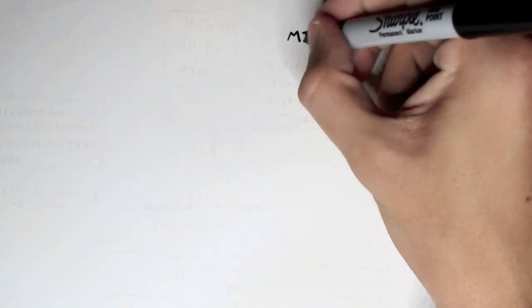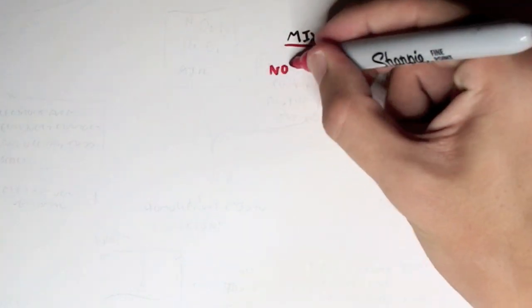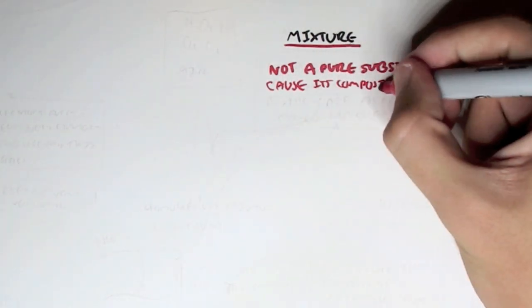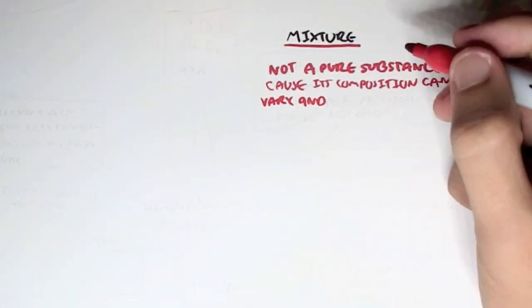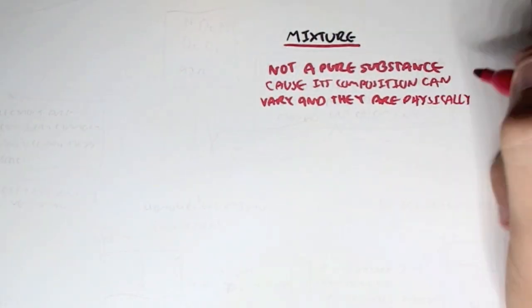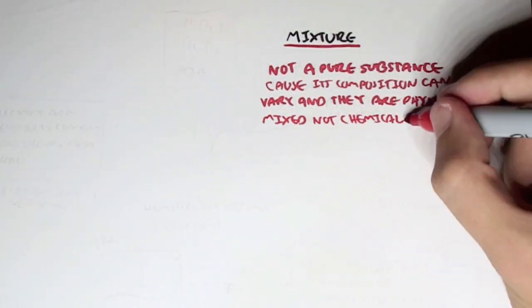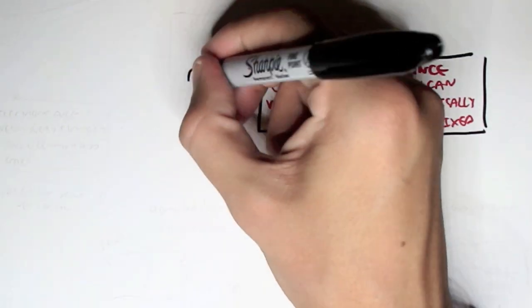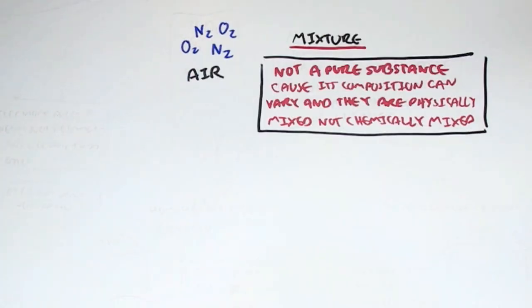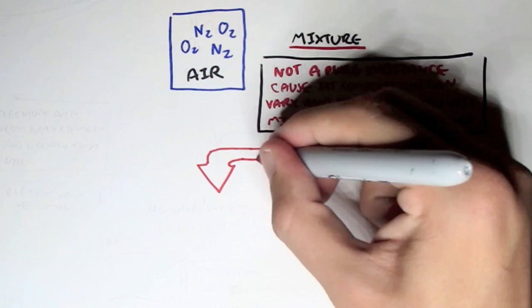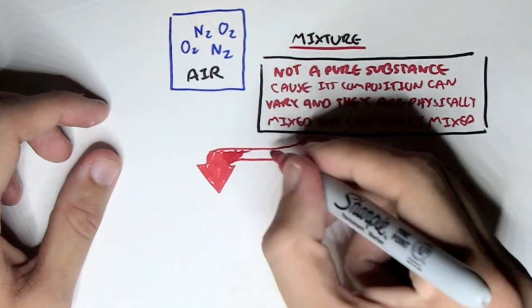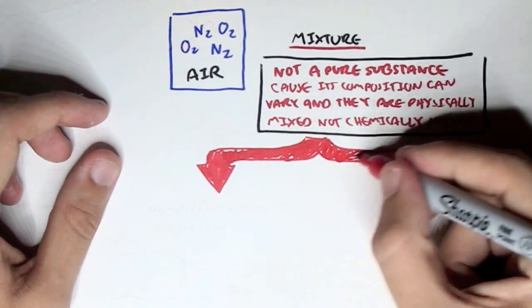A mixture. Now a mixture is not a pure substance because its composition can vary and they are physically mixed. They are not chemically mixed. And now this is pretty hard to understand but an example of this is air. In air, the air we breathe, we have oxygen gas and nitrogen gas. And so they are not actually chemically mixed because they are not bonded. However, they are physically mixed because they are present together.